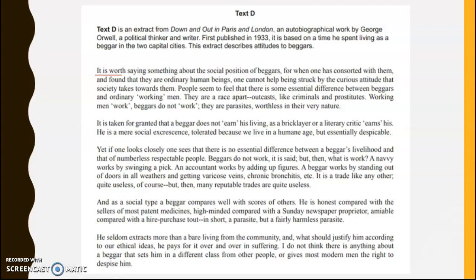Notice the very short paragraphs, and the way sentences start: 'It is worth,' 'It is taken,' 'Yet,' 'He seldom.' We have a real simplicity of style — lots of simple and compound sentences, lots of sentences that start with the subject. This gives us the idea of education being more widespread and text being quite democratic. This is a text for a widespread population; we can't assume it's just a certain type of reader. Notice Orwell starts by justifying why he is talking about the topic and its context.